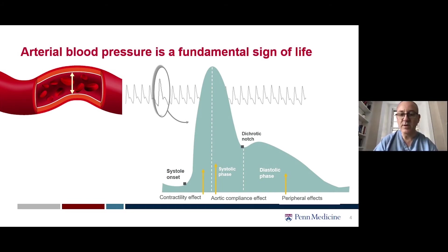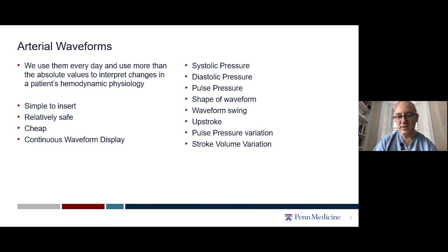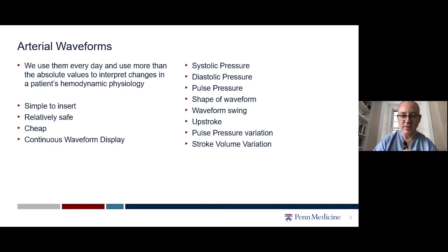At the start of the waveform and the upstroke, we've got the effect of contractility. We've then got the peak of the systolic waveform and the aortic compliance effect, then the dicrotic notch, and the diastolic phase, which is proportional to flow through the vessels and afterload or peripheral resistance. Arterial waveform analysis is simple, relatively safe, and cheap. It doesn't just give us systolic and diastolic blood pressure — we learn from the shape, the upstroke, and the pulse pressure and stroke volume variation during the respiratory cycle.